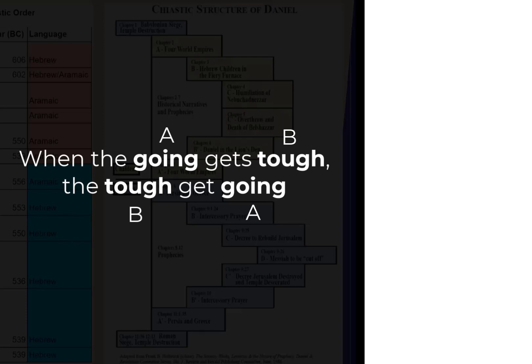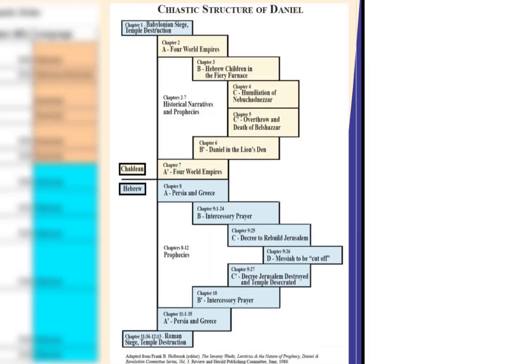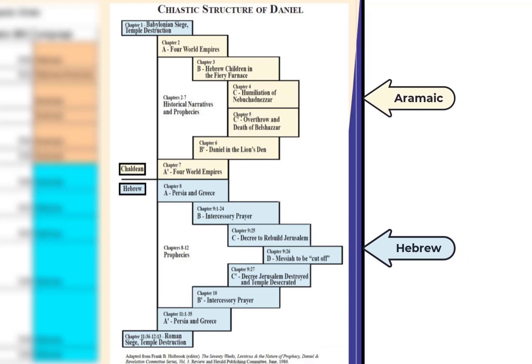There are two chiasms in the book of Daniel — one in Aramaic and one in Hebrew. Both sets of chiasms appear to be parallel in content and in meaning, which may be why the book is not in chronological order. Chapters 2 through 7 are in Aramaic and appear to be one chiasm.